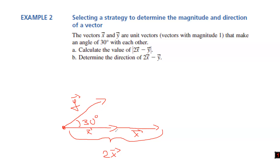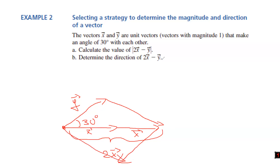Sine law: A over sine A equals B over sine B equals C over sine C. Remember those formulas — they're the most used for this section. Notice that x and y are unit vectors, so their magnitude equals one. We need to plug in: modulus of y squared is 1, and modulus of 2x squared is 4 — not 2, because it's the modulus of 2x.